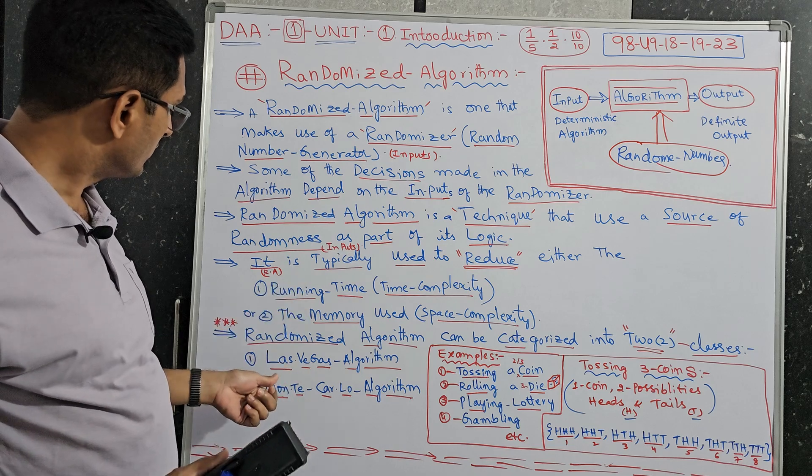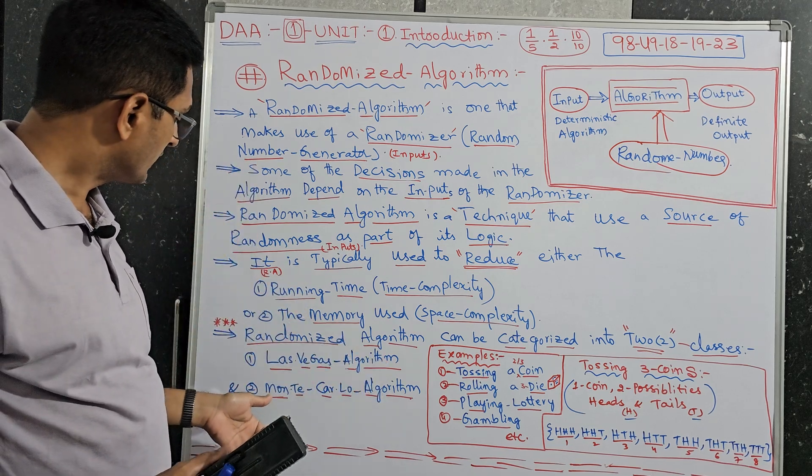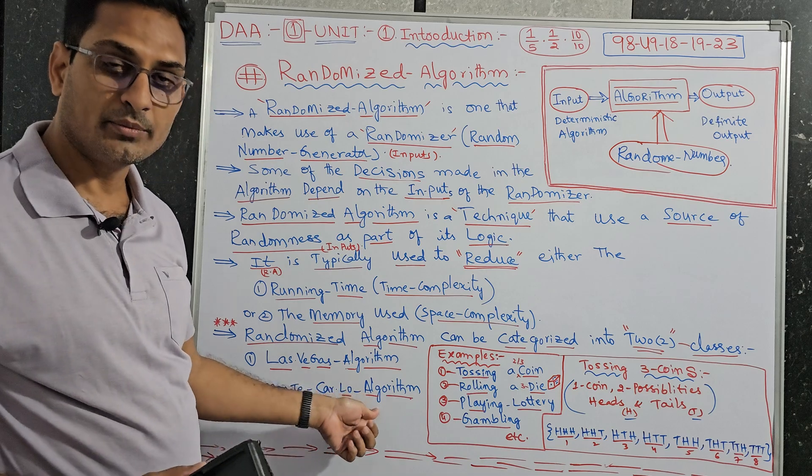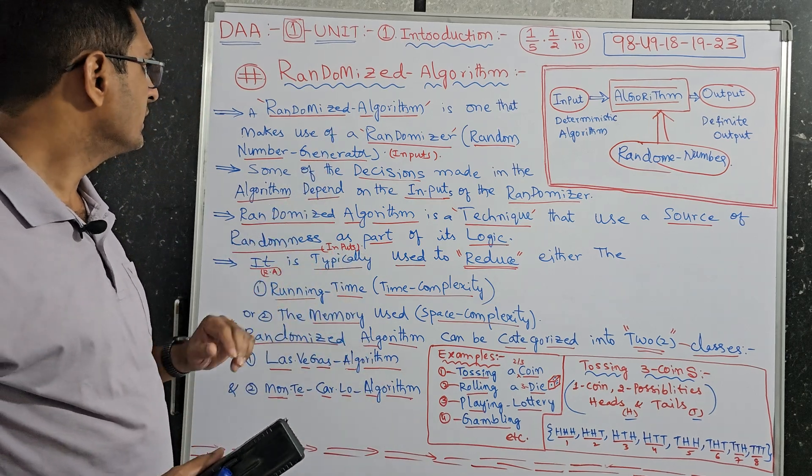This was explained in two ways. Las Vegas algorithm, one scientist explained in one type. And Monte Carlo algorithm is another type.